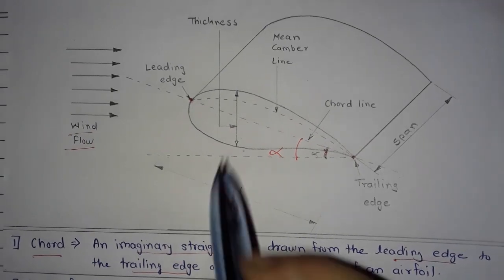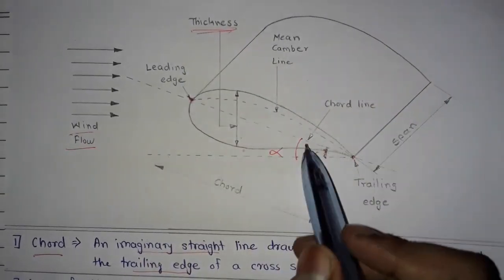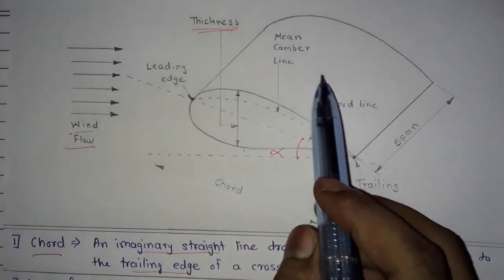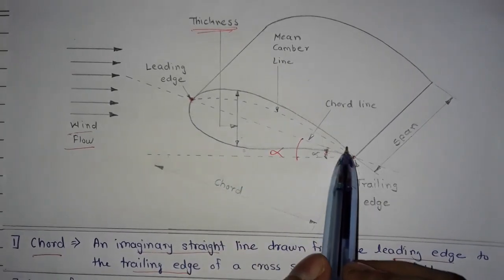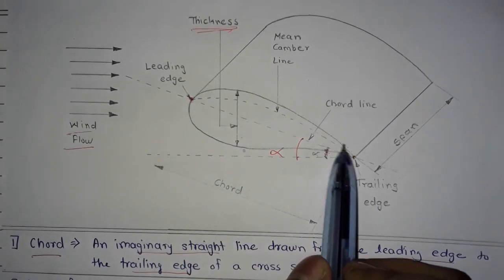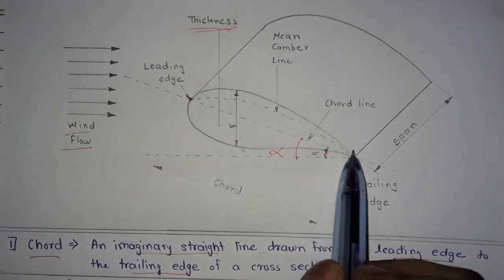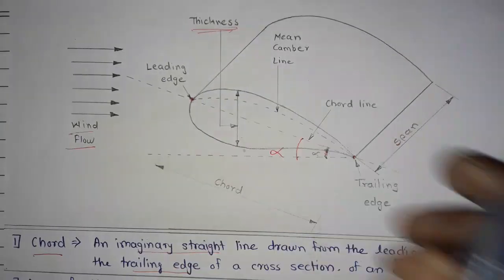Also, thickness is the distance between the upper surface of the airfoil and the lower surface of the airfoil. This is the thickness.